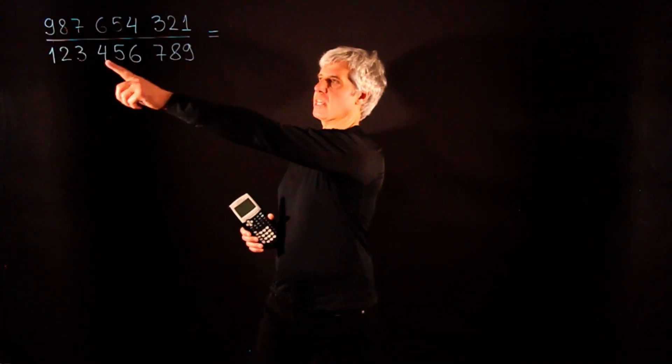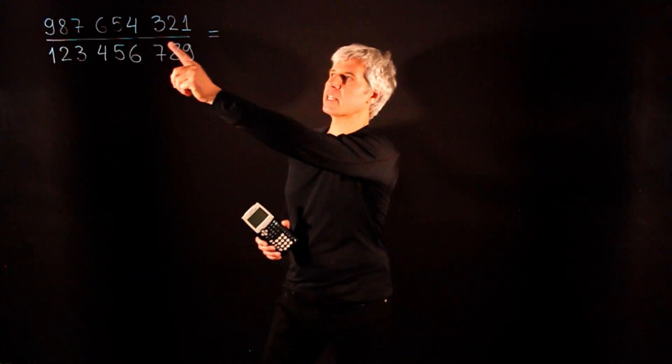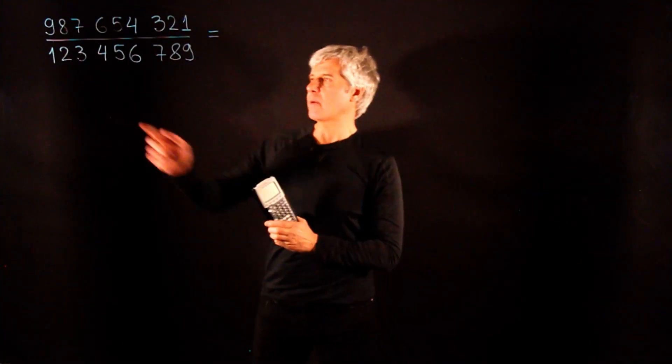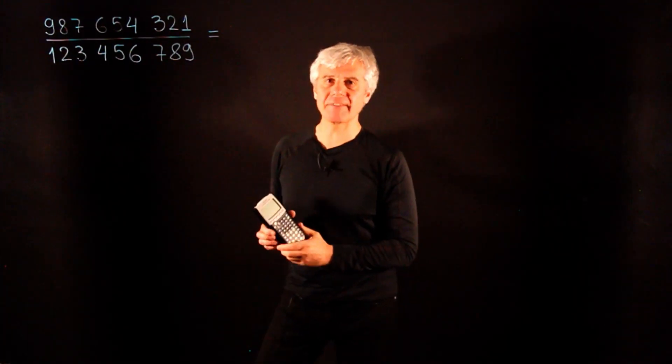Quickly, grab your calculator and do this. Divide 9, 8, 7, 6, 5, 4, 3, 2, 1 by 1, 2, 3, 4, 5, 6, 7, 8, 9.